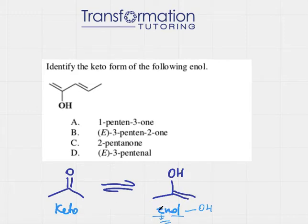"Enol" is made up of two words: "en" and "ol". "En" means there is a double bond and "ol" means we have an alcohol, so we will have OH next to the double bond.